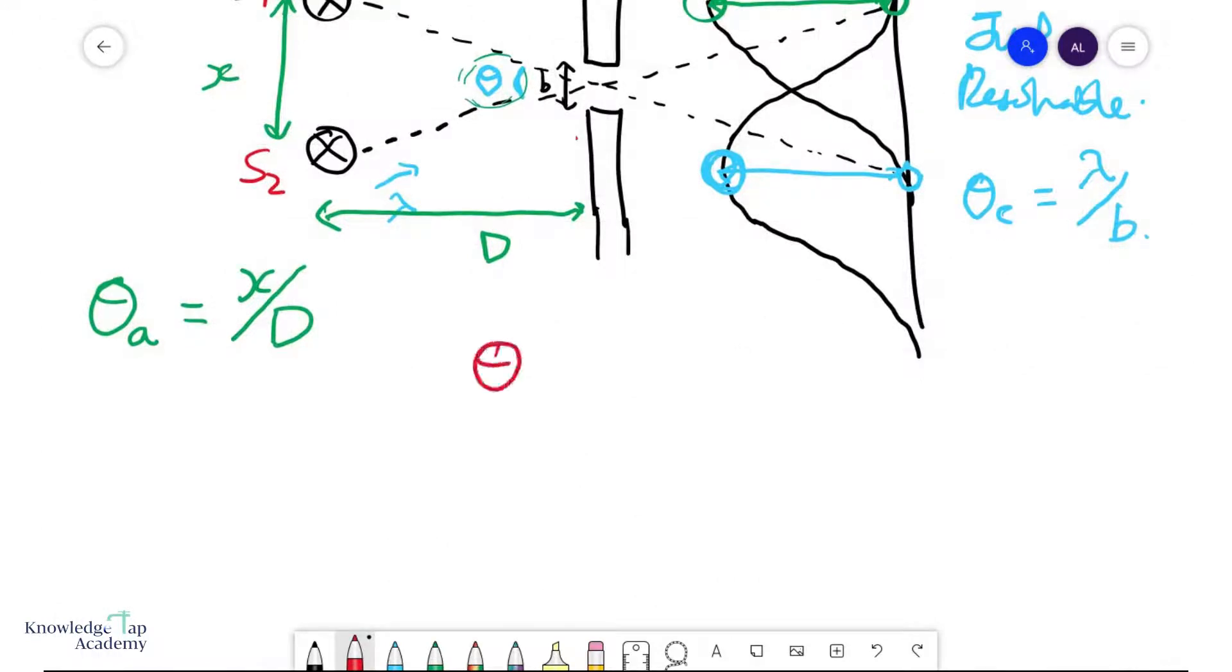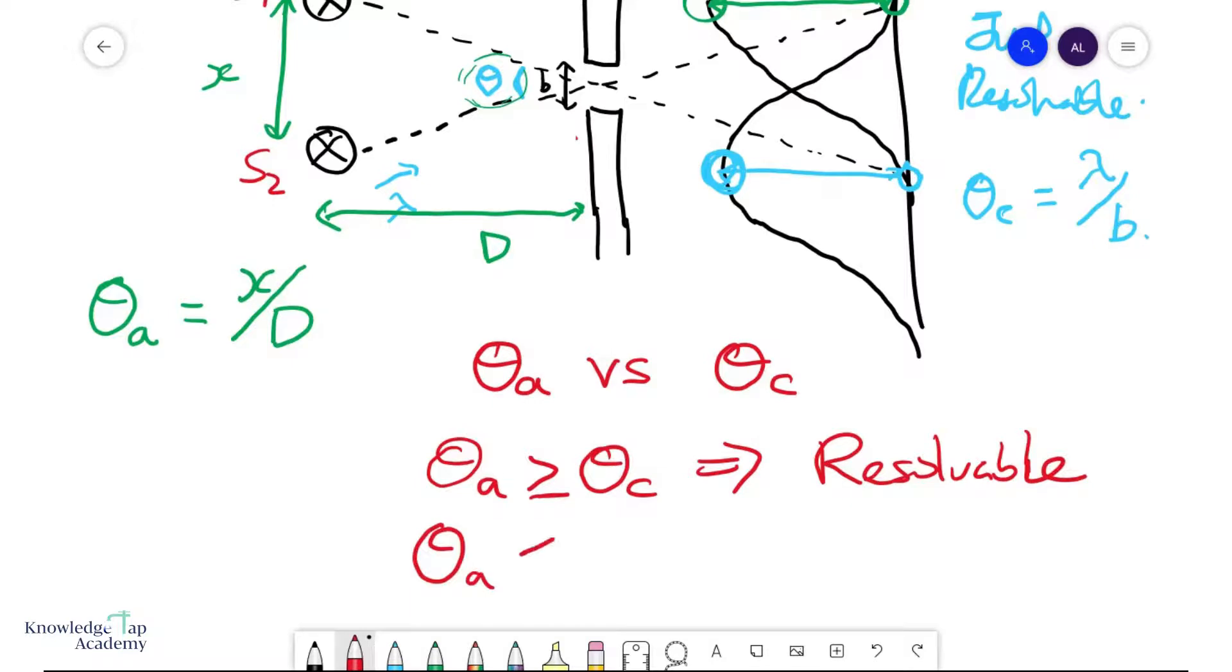And so what we need to do finally to check whether any two sources are resolvable, we have to compare theta actual and the critical angle as determined by lambda over b. And so if it is the case that theta actual is larger than this critical angle, or in fact equal to, then we say that the images are resolvable. You can see them separately.